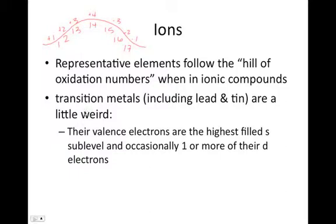Transition metals are a little weird. They can be a lot of different things, hence the term transition. Their oxidation state can change. And lead and tin, which are actually in group 14, they also fit into this because they can have charges of either plus two or plus four. And the reason for this is that their valence electrons is that highest filled S sublevel, which gives you two electrons to lose. But you can also occasionally lose one or more of their D electrons. And so the charges for transition metals will range from plus one all the way up to, in some cases, plus seven. But usually it doesn't go much above plus four.